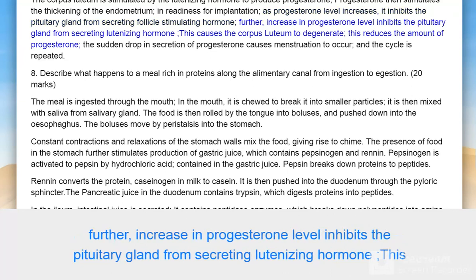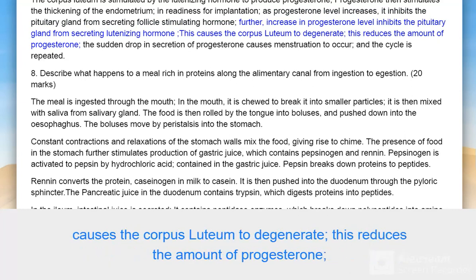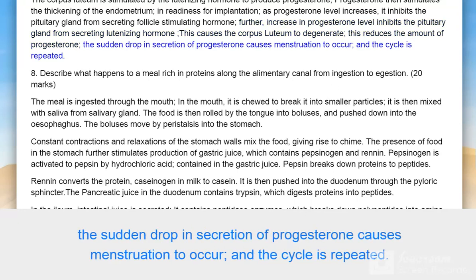Further increase in progesterone level inhibits the pituitary gland from secreting luteinizing hormone, causing the corpus luteum to degenerate. This reduces the amount of progesterone. The sudden drop in progesterone causes menstruation to occur, and the cycle is repeated.